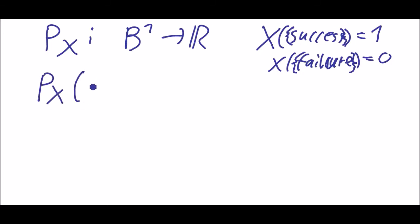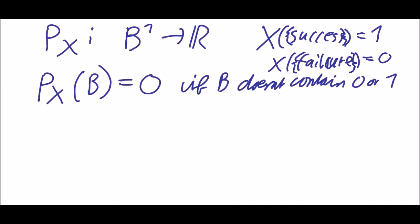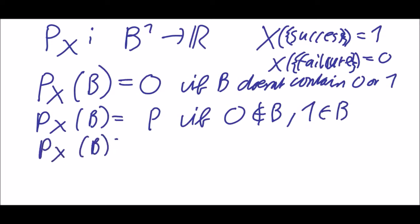So say Px of b should be 0 if b doesn't contain 0 or 1. And it should be p if 0 is not in b but 1 is in b. And Px of b is 1 minus p if 1 isn't in b but 0 is in b.